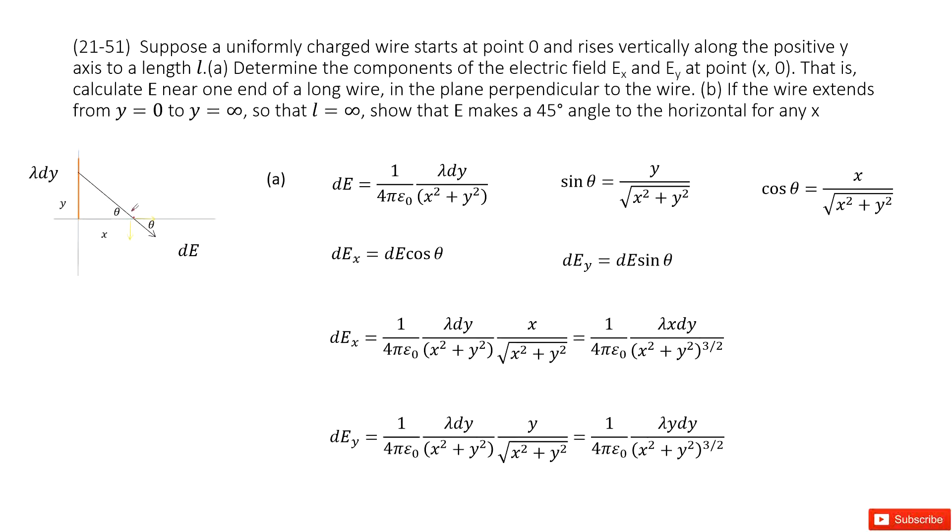So we can draw a picture like this one. We can consider a small fraction of this wire. The length is dy and the charge density is lambda. Therefore the charge for this small fraction is lambda dy. And this carries positive charge, which will produce the electric field radially outward along this direction for this small fraction.